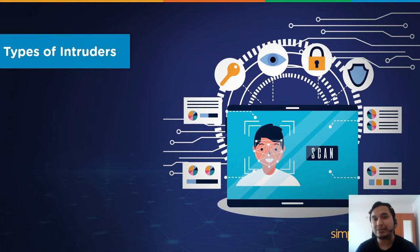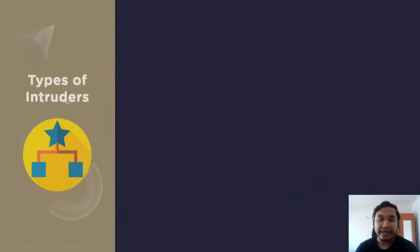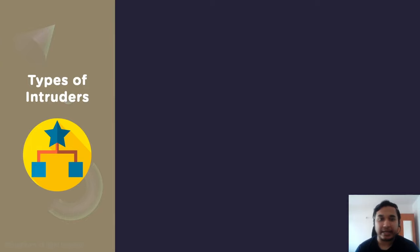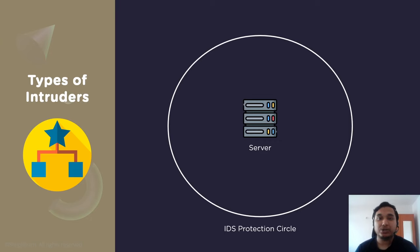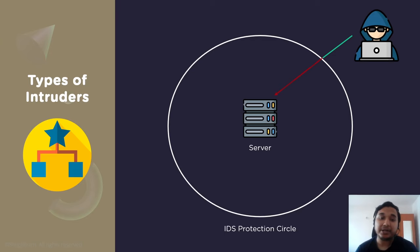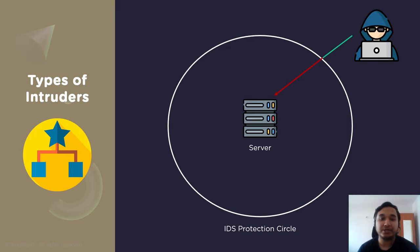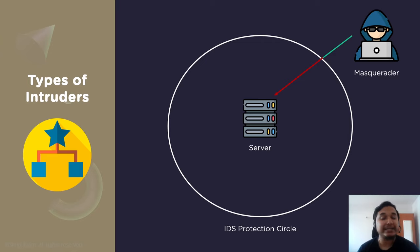Now let's look at the different types of intruders that IDS platforms must be aware of. Consider a scenario where servers are protected by IDS platforms and a hacker tries to breach the system from outside the organization using multiple attacks like DDoS attacks, injection attacks, etc. The category of individuals not authorized to use the system but who exploit user privacy and confidential information are known as masqueraders — outsiders who do not have direct access to the system and aim to attack unethically by stealing data.